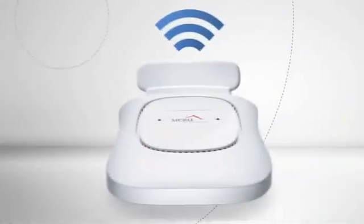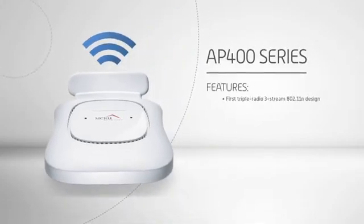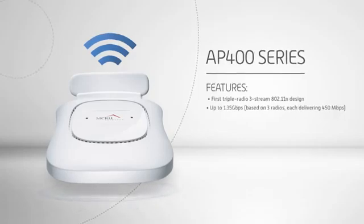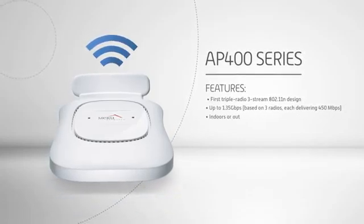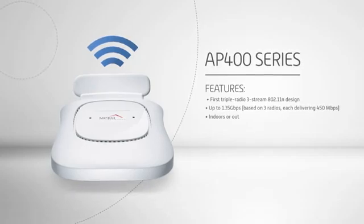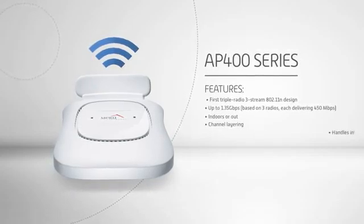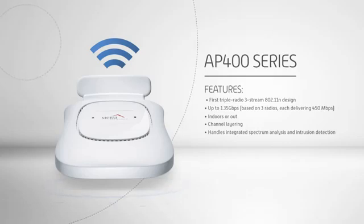Working in concert with this innovative operating system are the AP400 series access points, featuring Meru's first triple radio 3-stream 802.11n design. The addition of a third onboard radio and the ability to add a fourth via USB means the AP400 series easily handles the toughest wireless workloads. Together, these added radios boost the benefits of channel layering, more than doubling the capacity of any enterprise solution available today.